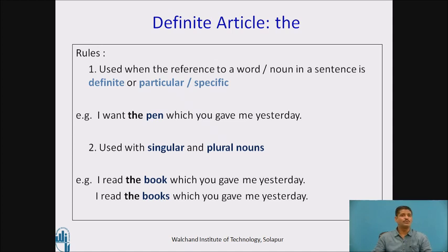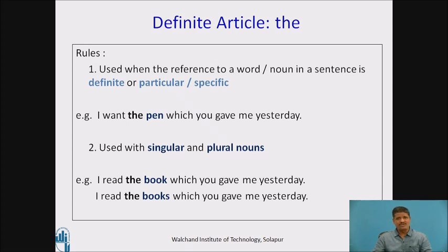Now we will understand rule number two for the definite article 'the'. The definite article 'the' is used with both singular and plural nouns. Sentence one: 'I read the book which you gave me yesterday.' Here the reference to the noun 'book' is very definite, particular, and specific, and the noun 'book' is singular — hence we have used the definite article 'the'.